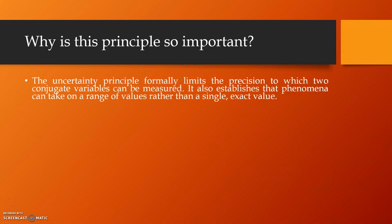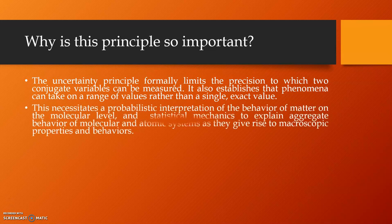So, this Uncertainty Principle formally limits the precision to which two conjugate variables can be measured. It also establishes that phenomena can take on a range of values rather than a single exact value. This necessitates a probabilistic interpretation of the behavior of matter on the molecular level and statistical mechanics to explain the aggregate behavior of molecular and atomic systems as they give rise to macroscopic properties and behaviors.